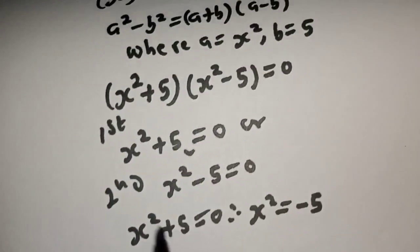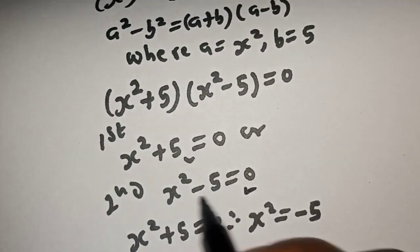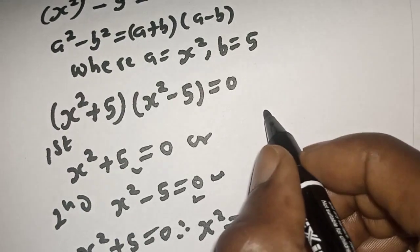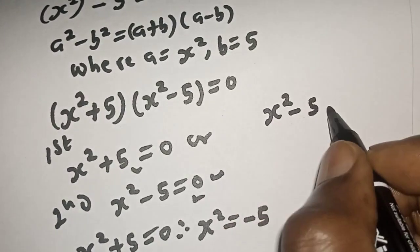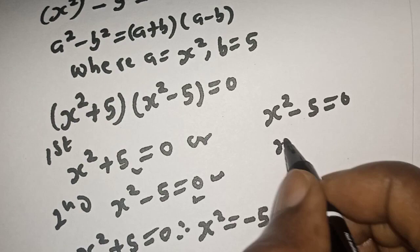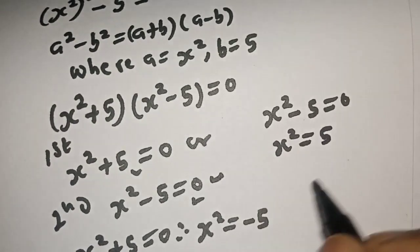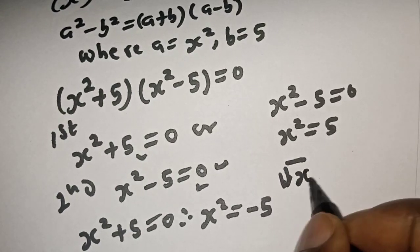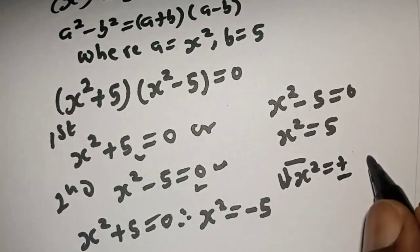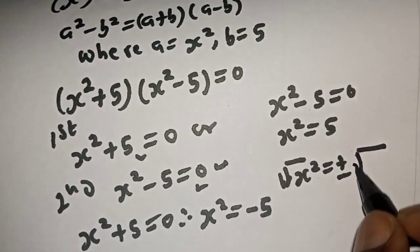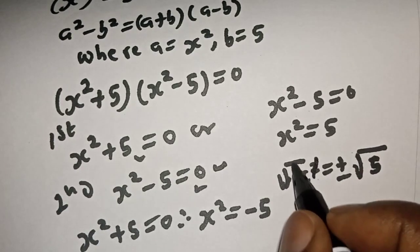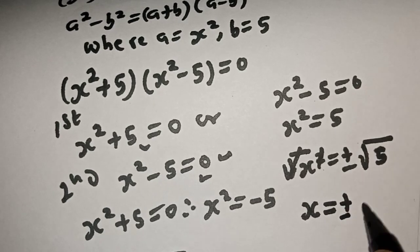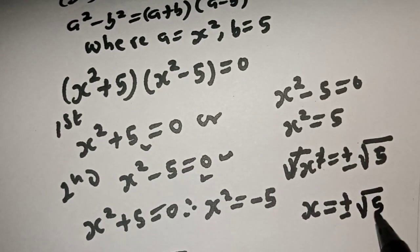Now let's solve for s from the second case: s squared minus 5 is equal to 0. From this, s squared is equal to 5. Let's take the square root of both sides: the square root of s squared is equal to plus or minus the square root of 5. This one will cancel, so s is equal to plus or minus the square root of 5.